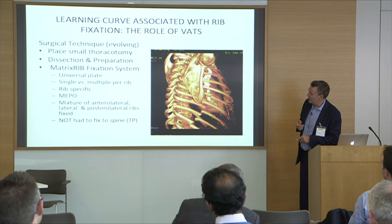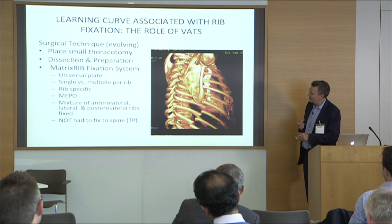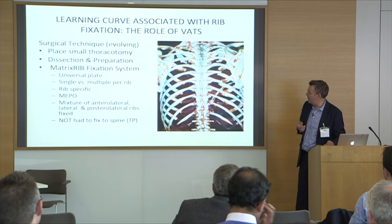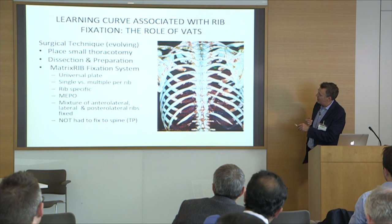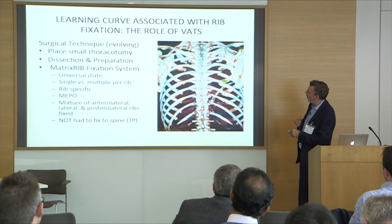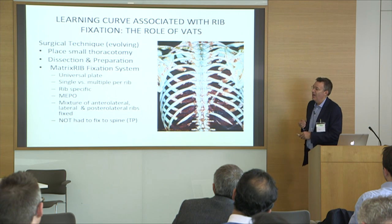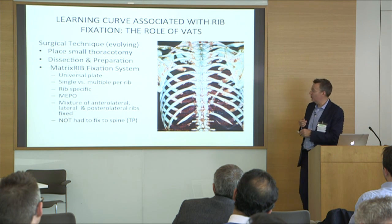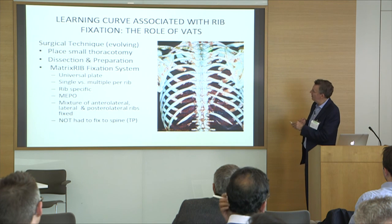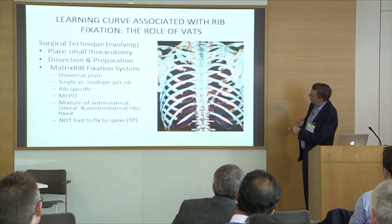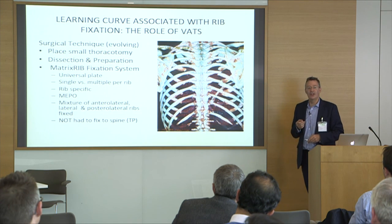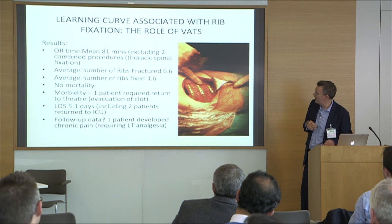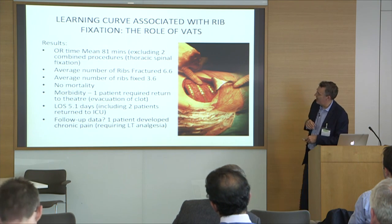For lateral rib fractures — such as a window cleaner who fell off his ladder — I don't get too worried about where the ribs are. For fractures at the level of the transverse process, people get very worried, but I just place them in the usual fashion. What is critically important is your incision placement. You must be careful — if you use the camera first and work out where to place the incision, you can access the chest wall comfortably without needing a large Pancoast-style incision.